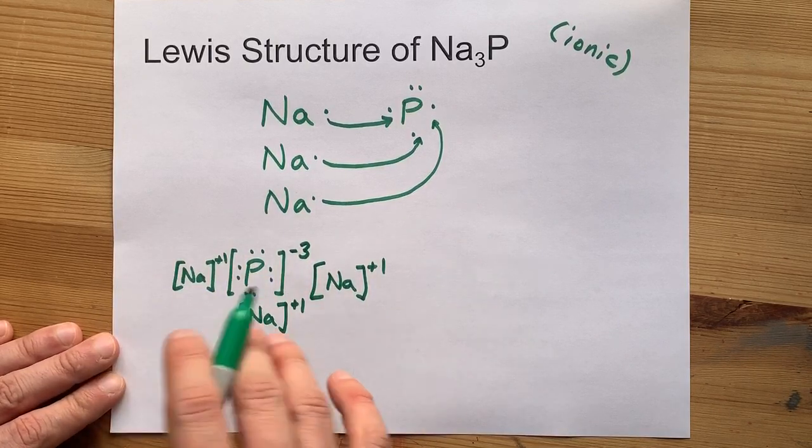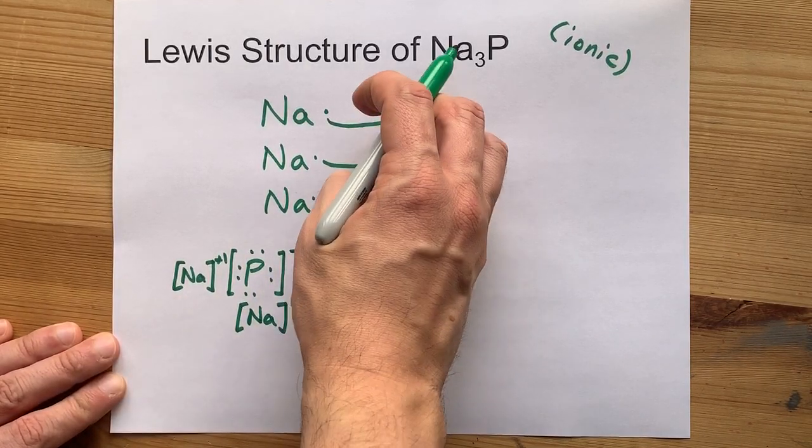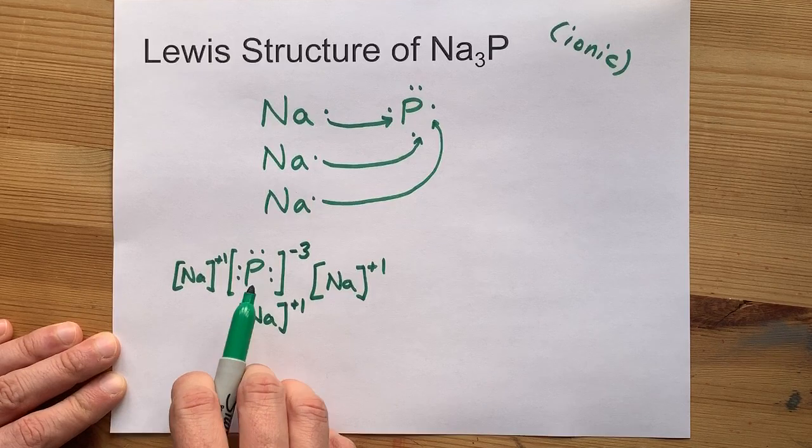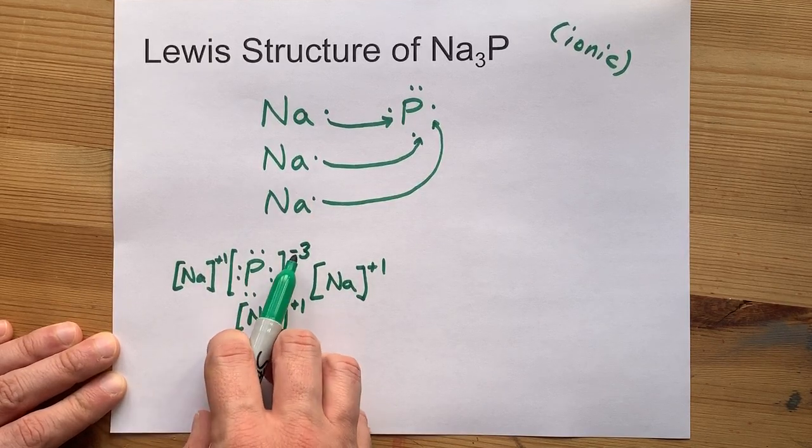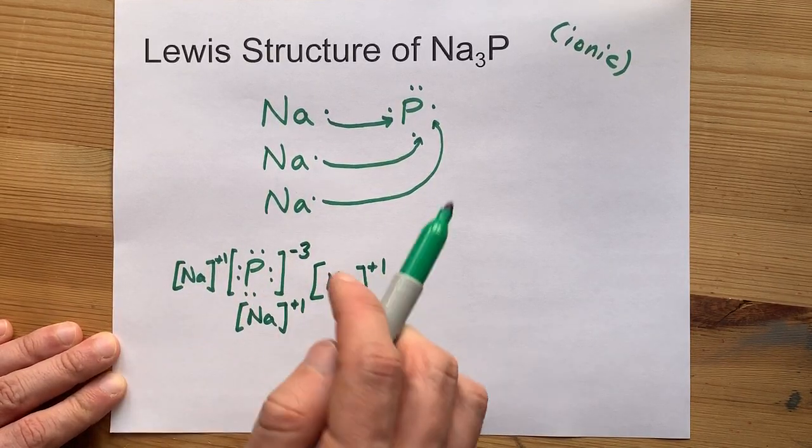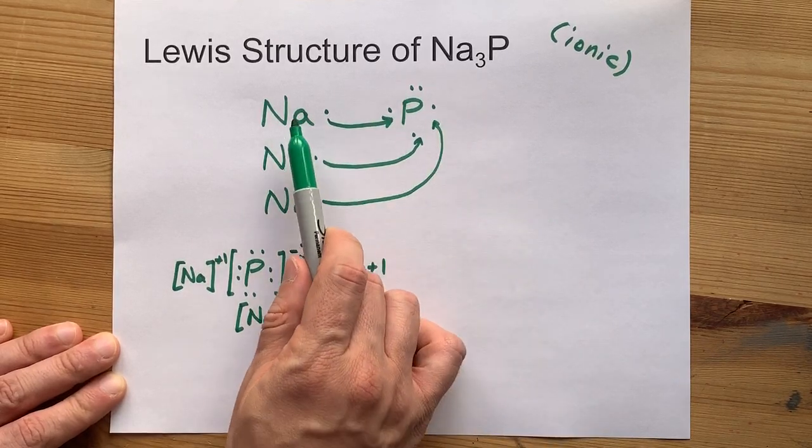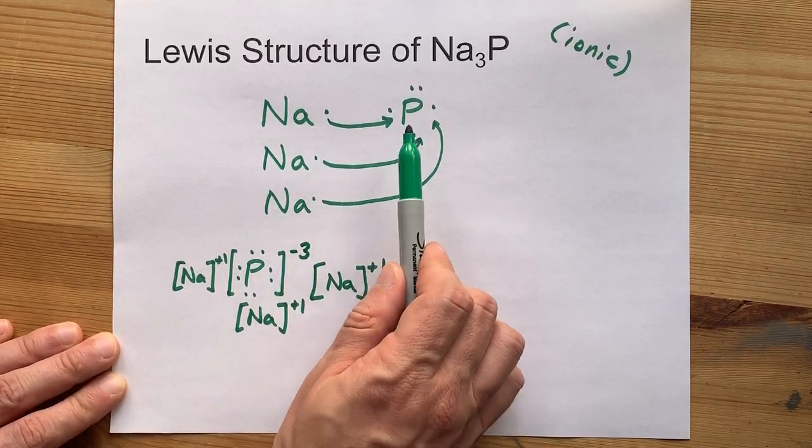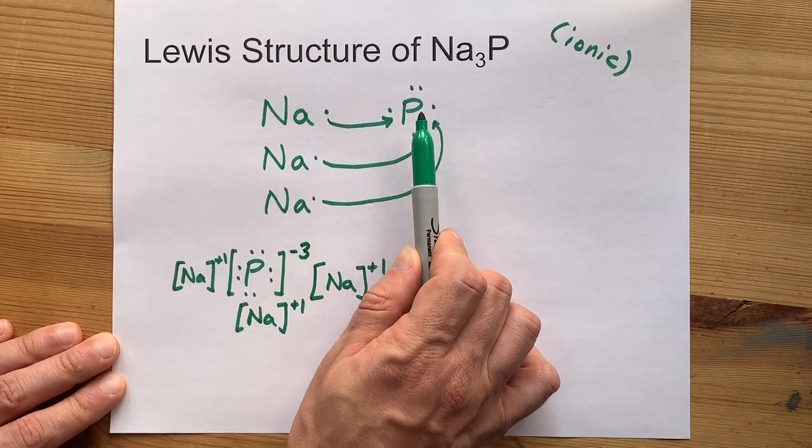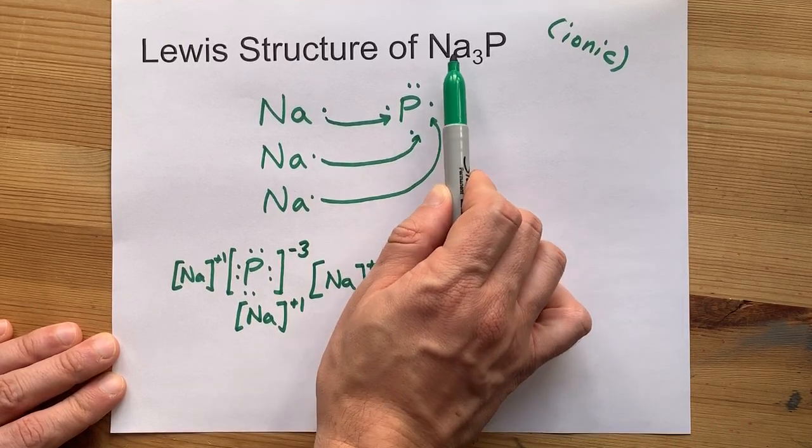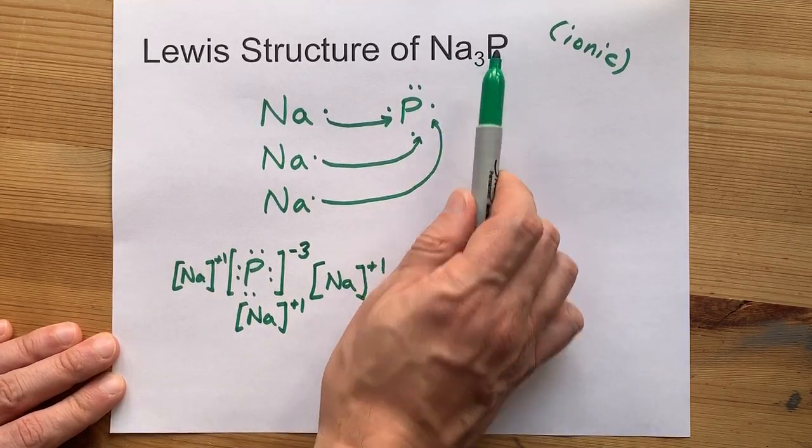This is my personal preferred Lewis structure for sodium phosphide. A little phosphorus with a minus 3 charge is in the center and 3 Na's around it. P.S. The fact that you needed 3 Na's to satisfy the full outer shell requirement here is why the formula is Na3P.